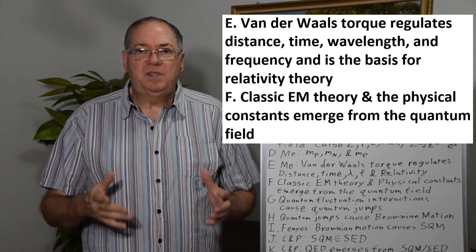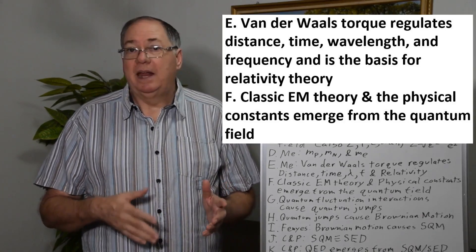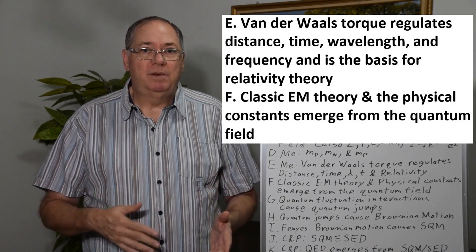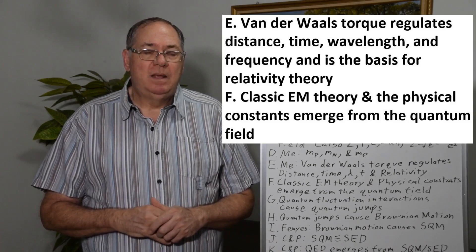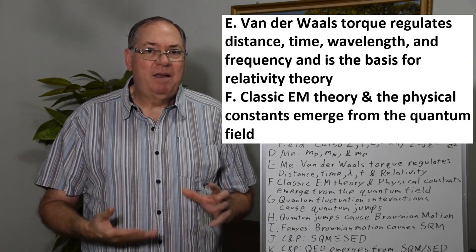So given those things, classical electromagnetism and all of its physical constants are emergent properties of the quantum field. So the missing piece of the puzzle is, well, how do we get electrodynamics out of that?